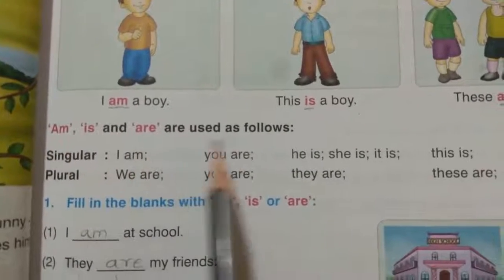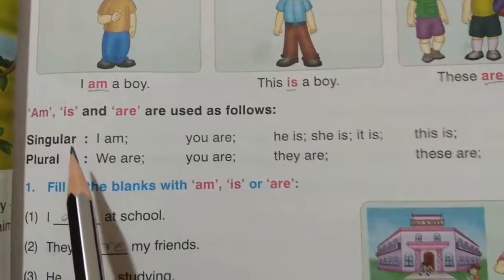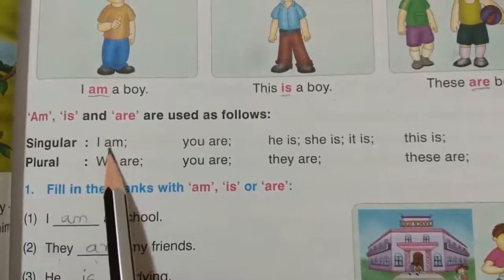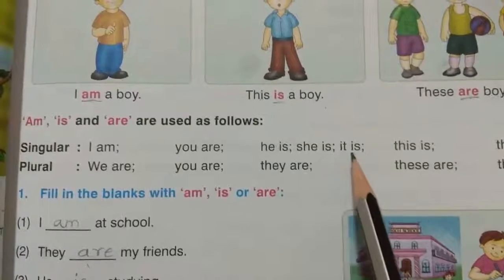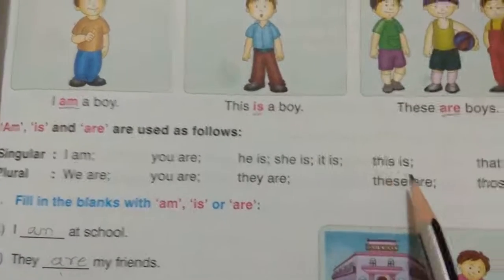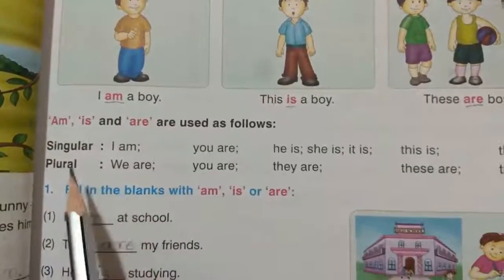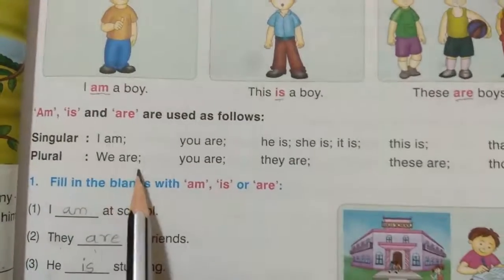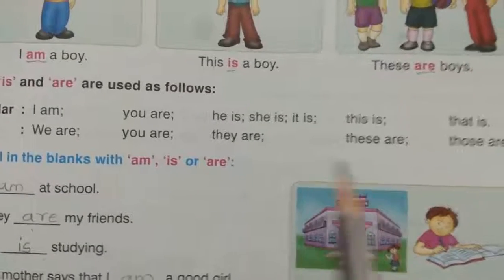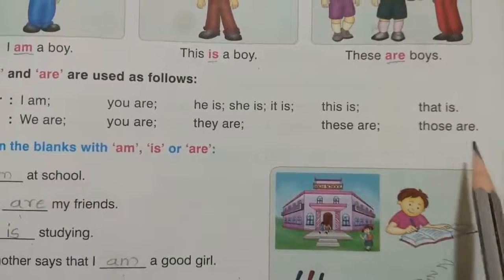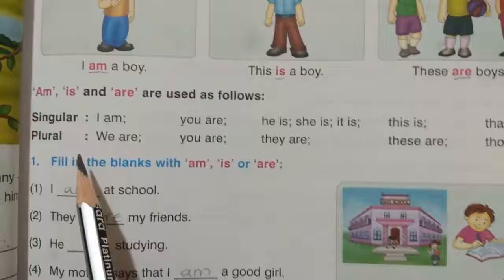Am, Is and Are are used as follows. For singular: I am. You are. He is. She is. It is. This is. That is. For plural: We are. You are. They are. These are. Those are. You should use them like this for singular and for plural.